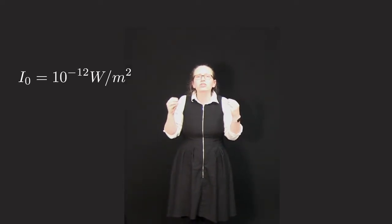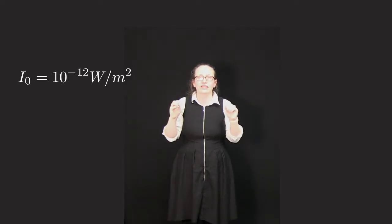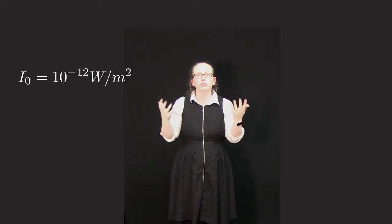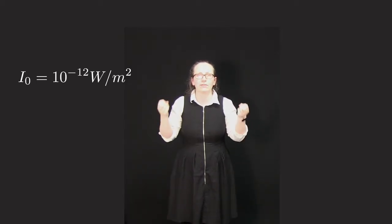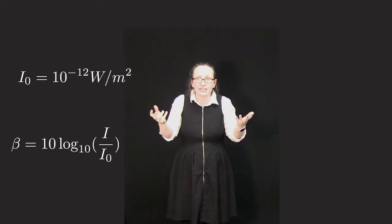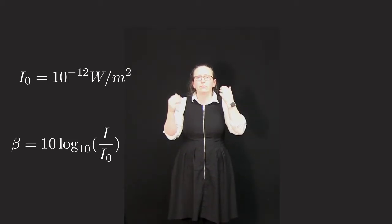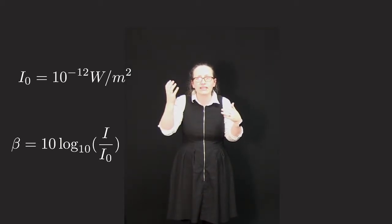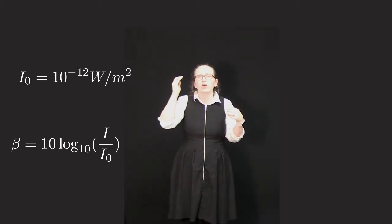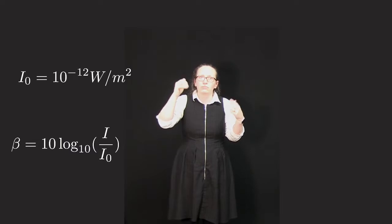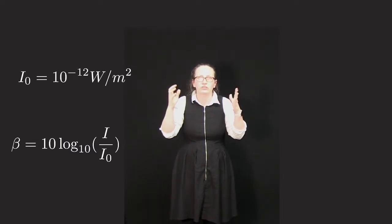Because there is such a wide range of sounds that people can hear, scaling factors of 10, we generally use a logarithmic scale to describe sound levels. The sound level is given in decibels and it's given the symbol beta. The equation to calculate sound levels is given by beta equals 10 log to the base 10 of I over I0, where I0 is that threshold of hearing.